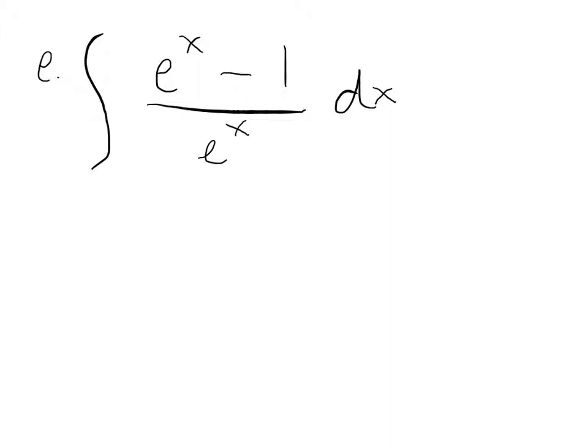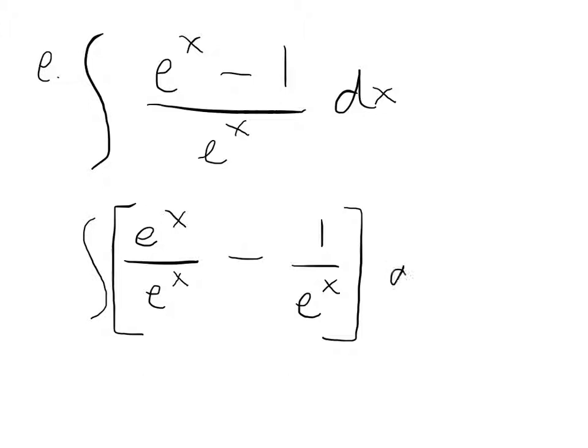So our first step that we have to do here is we have to split the fraction into two parts. So we're going to have the integral of e to the x over e to the x minus 1 over e to the x, all of that still with dx.